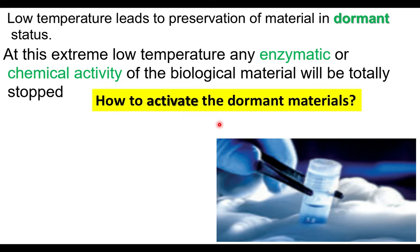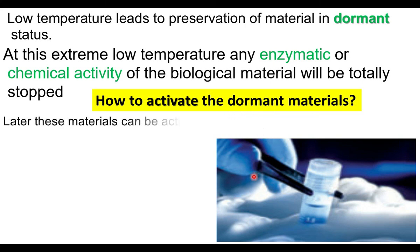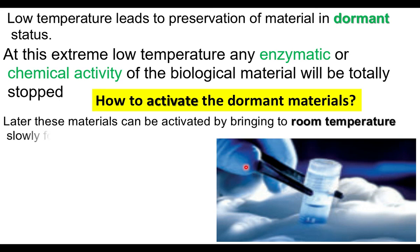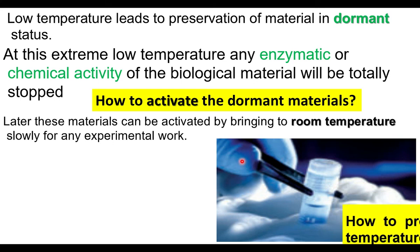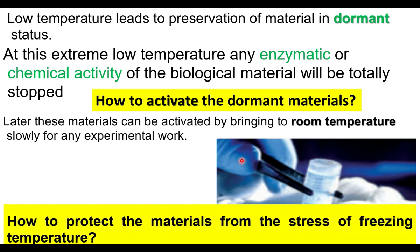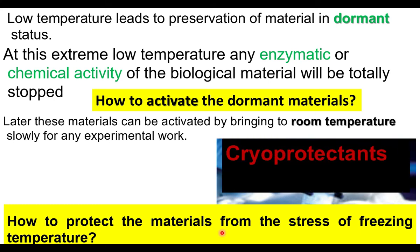How do we activate the dormant material? Seeds, pollen, etc. are in a dormant state under low temperature. If we want to use them, we have to activate the material from the dormant state. These materials can be activated by slowly bringing them to room temperature. To prevent damage caused by freezing temperature, cryoprotectants are used.